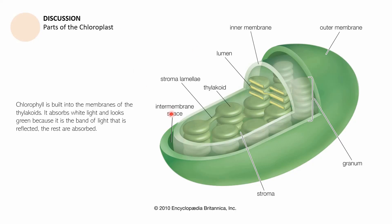Chlorophyll is built into the membranes of the thylakoids. It absorbs white light and looks green because green is the band of light that is reflected, while the rest are absorbed. The chloroplast is always represented by a capsule shape — like an oval that is green. It has been opened here so we can investigate its interior. It has the following parts: the outer membrane, which is the outermost covering; then a small space called the intermembrane space; then comes the inner membrane, which is translucent — not entirely transparent but with a slight cloudiness.